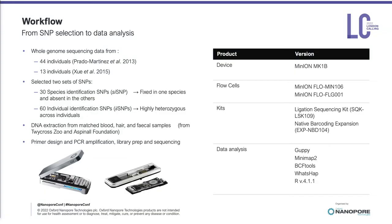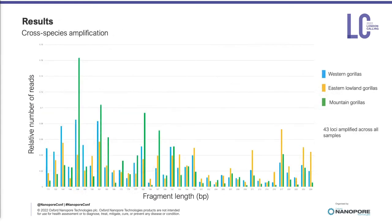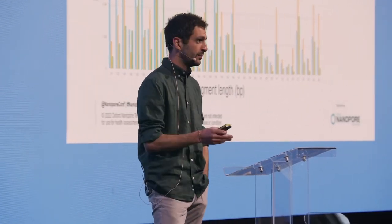We utilized both the MinION and the Flongle flow cells for side-by-side comparison, in conjunction with the ligation sequencing kit and the native barcoding expansion. We then followed the standard Guppy approach for base calling, Minimap for alignment, and BCFtools for variant calling. Here I'm showing the length range of a core set of 43 loci amplified across all different individuals and runs — spanning from 111 to 228 bases, so they're really short, as we want them to work on non-invasive samples with highly degraded DNA.